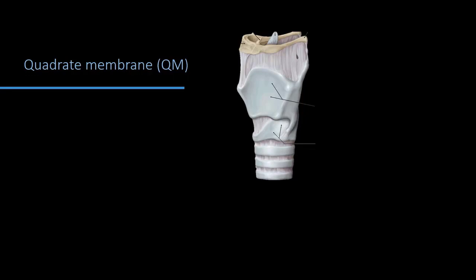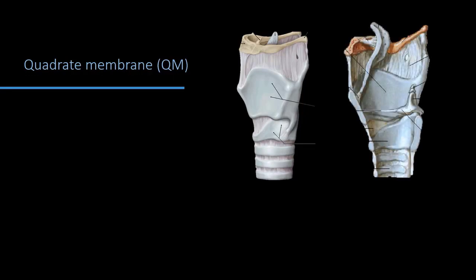The quadrate membrane, as the name suggests, is quadrangular — indeed trapezoidal in shape. Posteriorly it is attached to the apex of the arytenoid, anteriorly to the border of the epiglottis. Superiorly it is free and inferiorly it is free. There are two such membranes, one on the right side and one on the left.